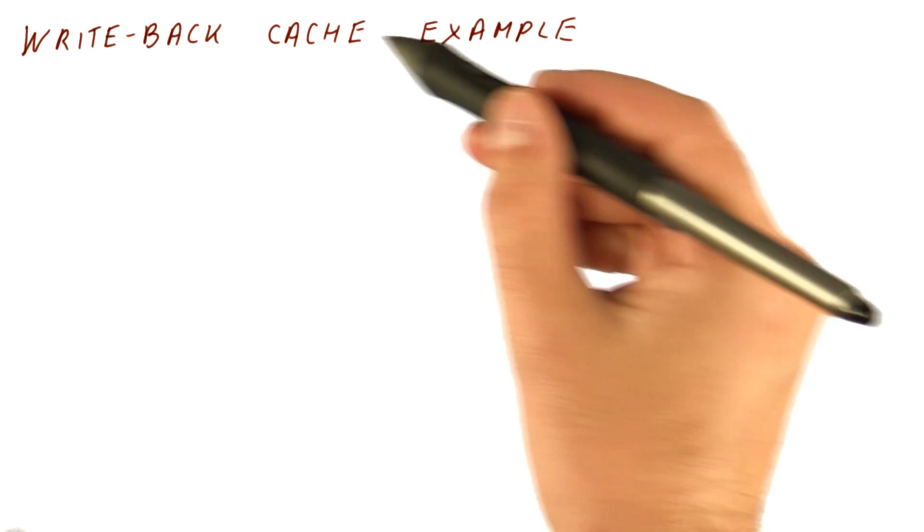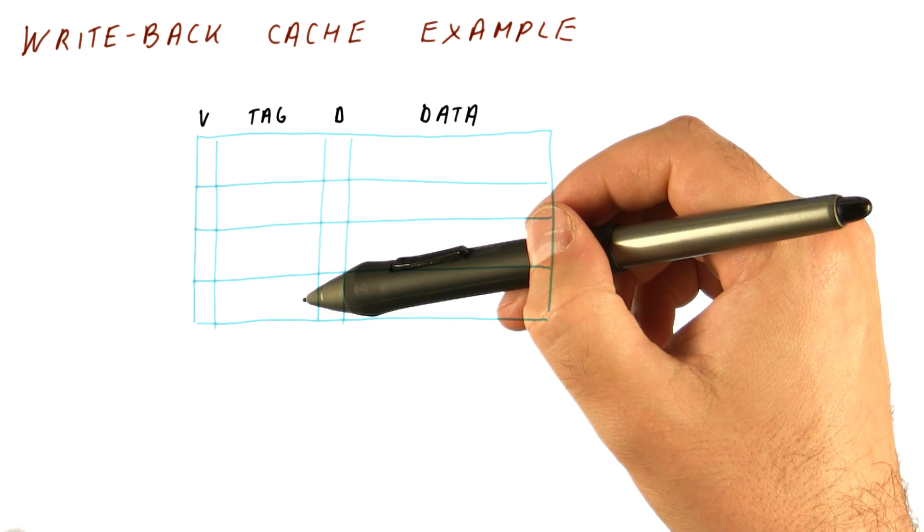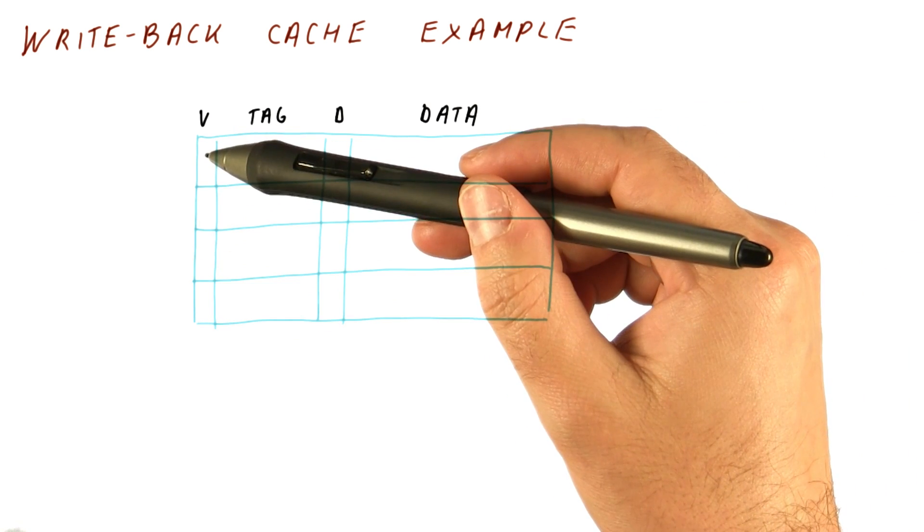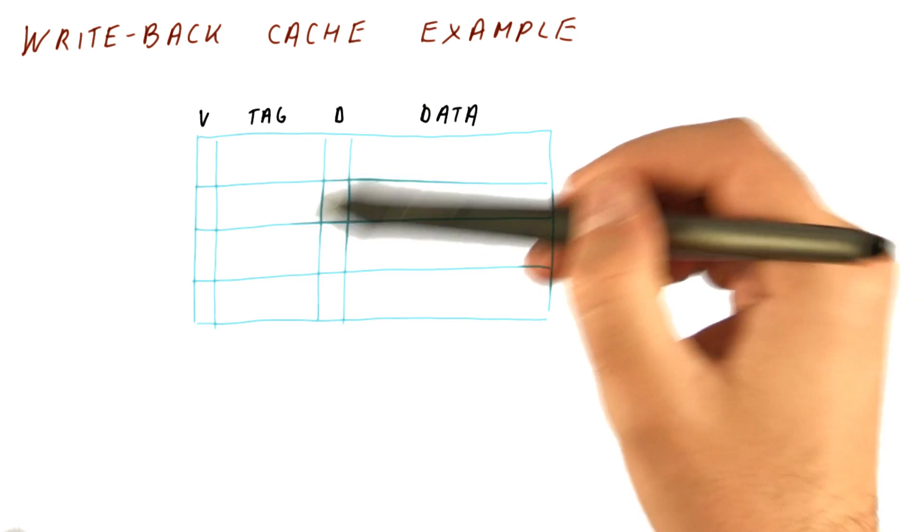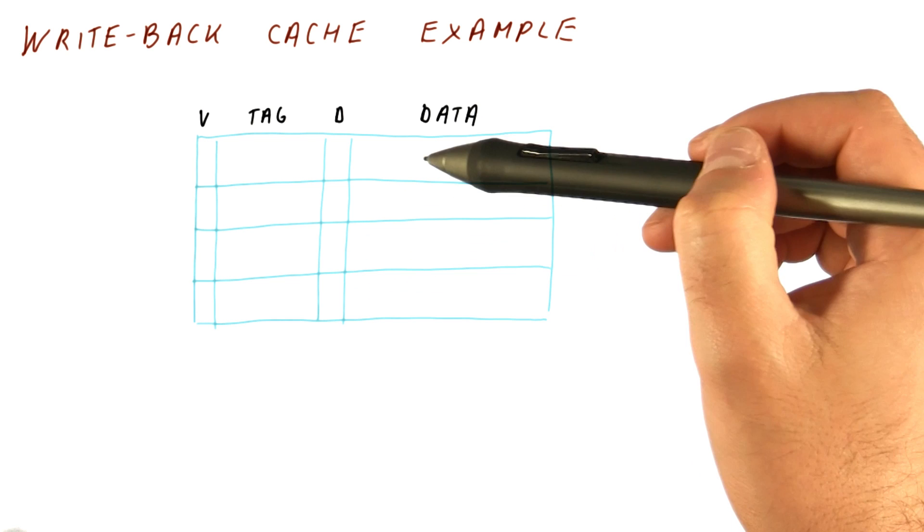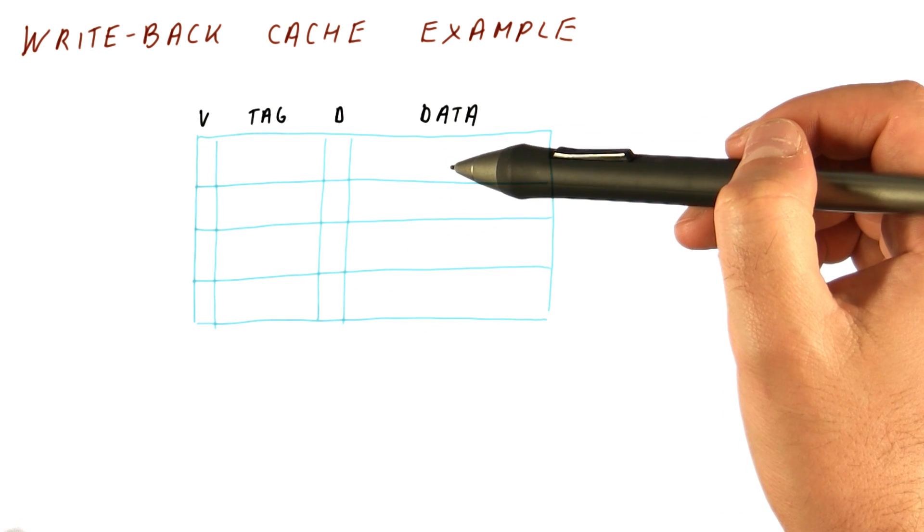So let's look at an example of how a write-back cache would work. Say we have a small four entry cache that is direct mapped. Each line has a valid bit, a tag, and a dirty bit. We don't need the LRU counter because in a direct map cache, we know exactly what to replace. We don't need the LRU counters to tell us that.